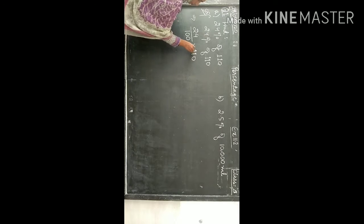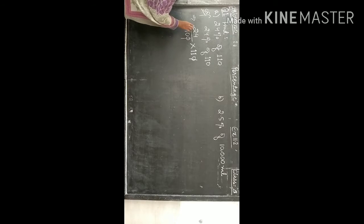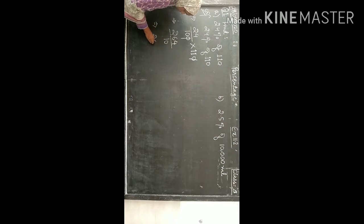Zero-zero cancel. 24 into 11 is 264, divided by 10, and this is equal to 26.4.